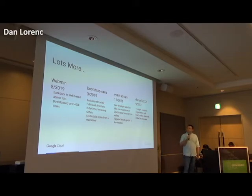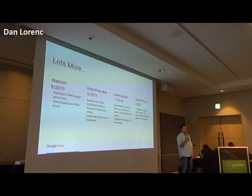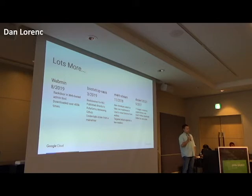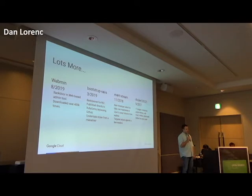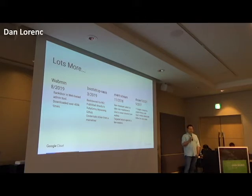One that I find particularly notable is the Docker 1-2-3-3-2-1 version. This carried out a long con — people uploaded actually useful container images to Docker Hub when it first came out, and those images were used for years. After building up that trust over a long period of time, they injected code to mine cryptocurrency in the next versions. These images were alive on Docker Hub for over a year before anyone noticed. There's really no way to prevent these things without actually auditing everything you're using.